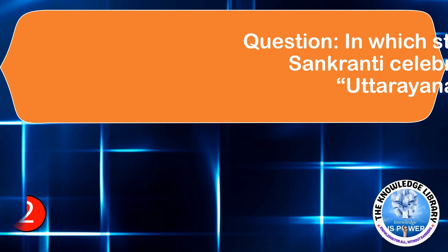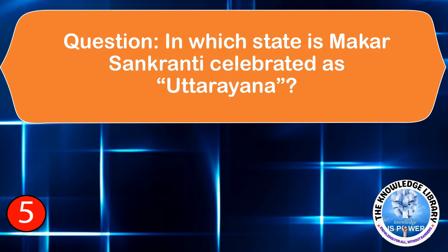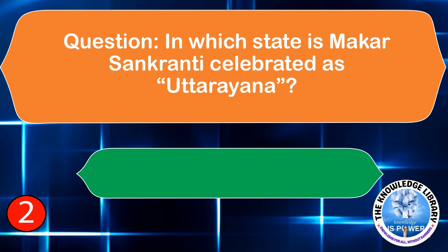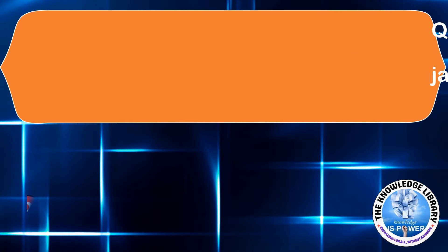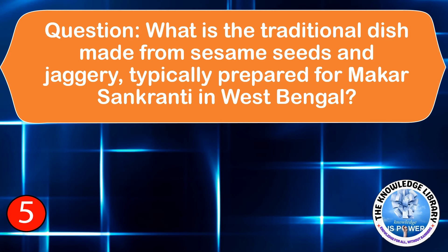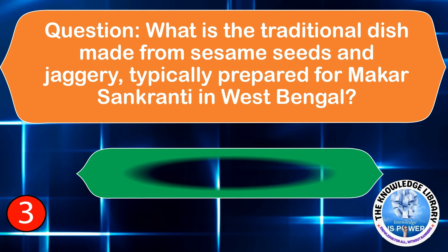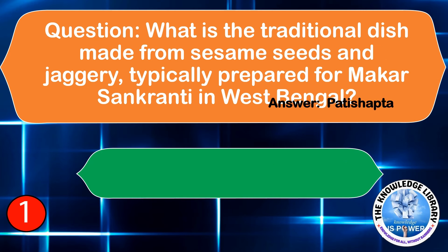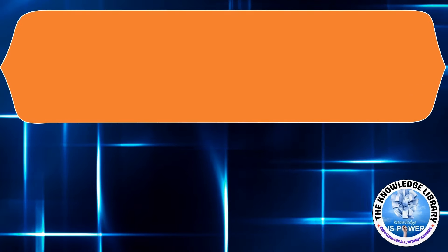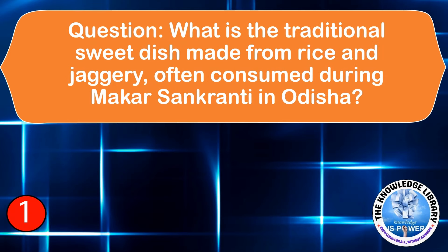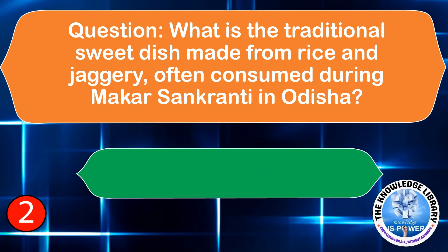The next question is: In which state is Makar Sankranti celebrated as Uttarayan? The answer is Gujarat. The next question is: What is the traditional dish made from sesame seeds and jaggery typically prepared for Makar Sankranti in West Bengal? The answer is Pati Shapta. The next question is: What is the traditional sweet dish made from rice and jaggery often consumed during Makar Sankranti in Odisha? The answer is Pithe.